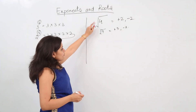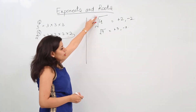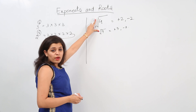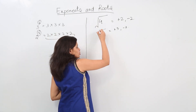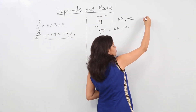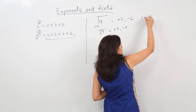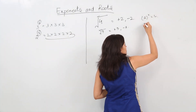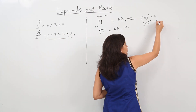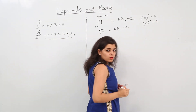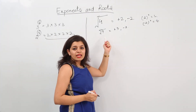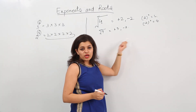If there is no index on the radical symbol, it means it is the square root — that means the power is 2. We can say that 2 squared is 4, and (−2) squared is also 4. Similarly, 3 squared is 9, and (−3) squared is also 9.